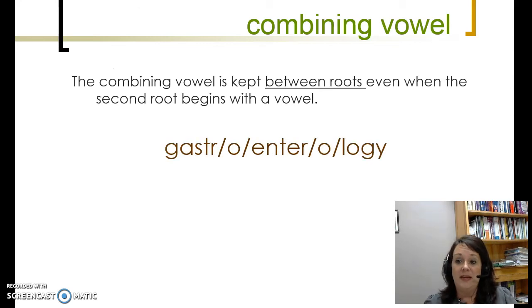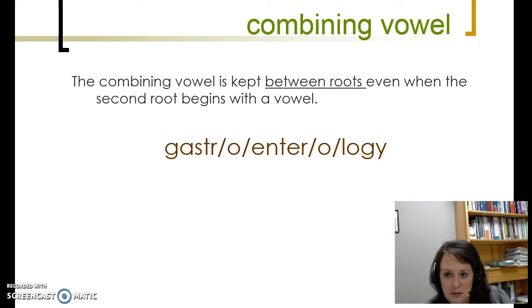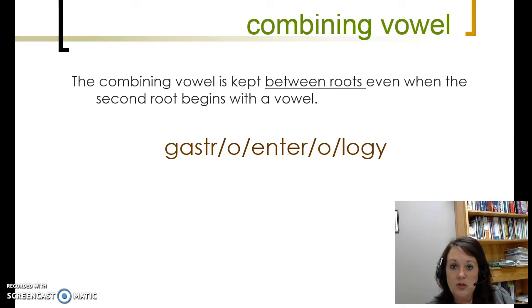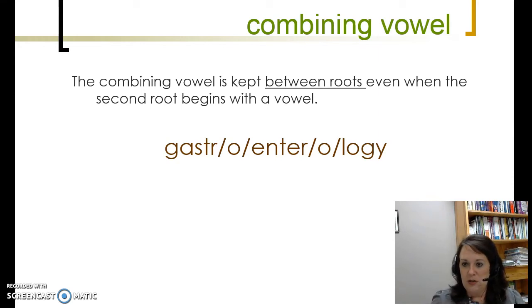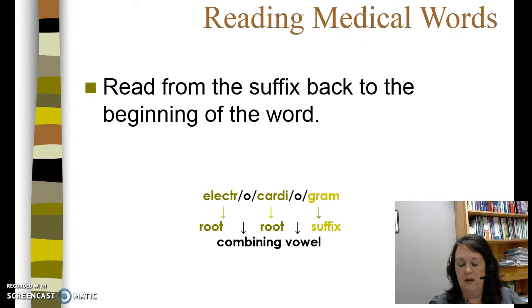The combining vowel is kept between more than one combining form or root, even when the second root begins with a vowel. So here — gastroenterology. Gastro and entero are two combining forms. You do keep that O if it's between two combining forms. You only drop the O if it's before a suffix that starts with a vowel.